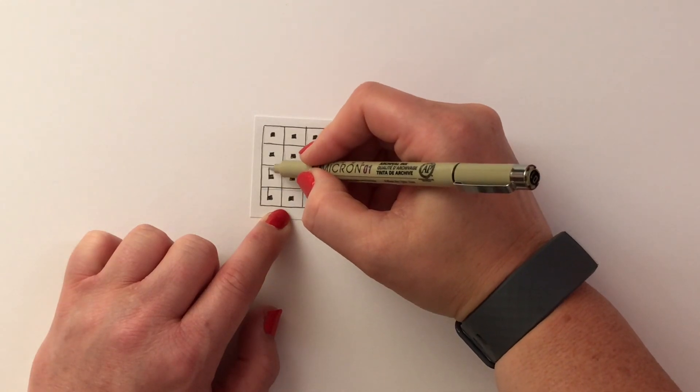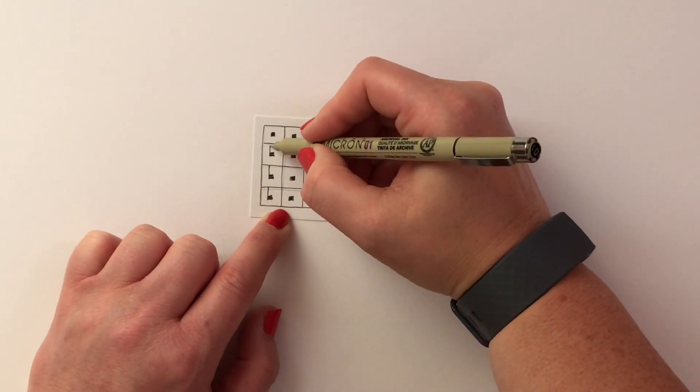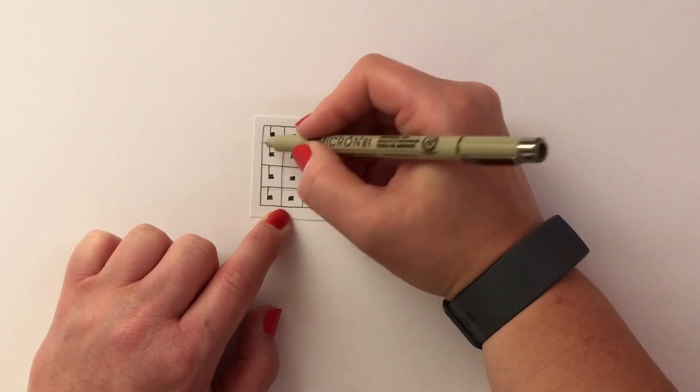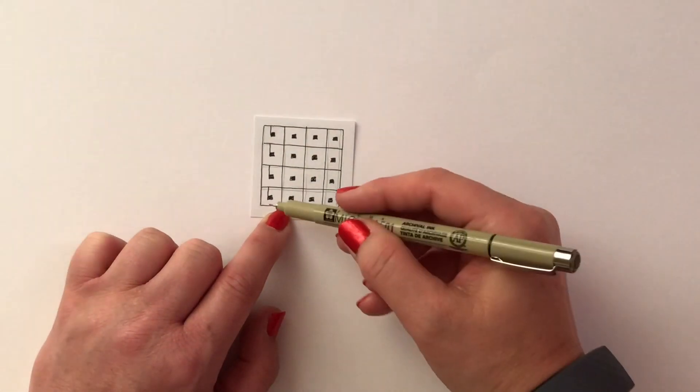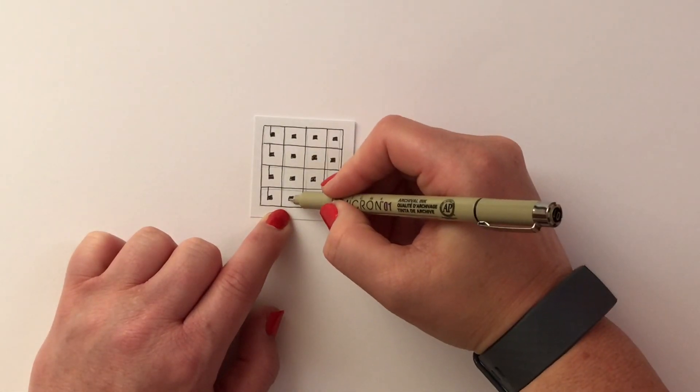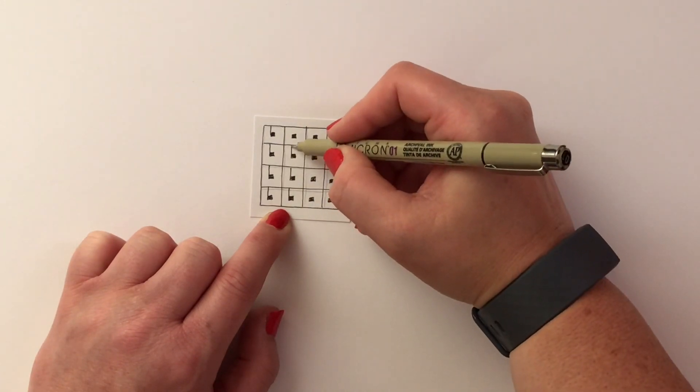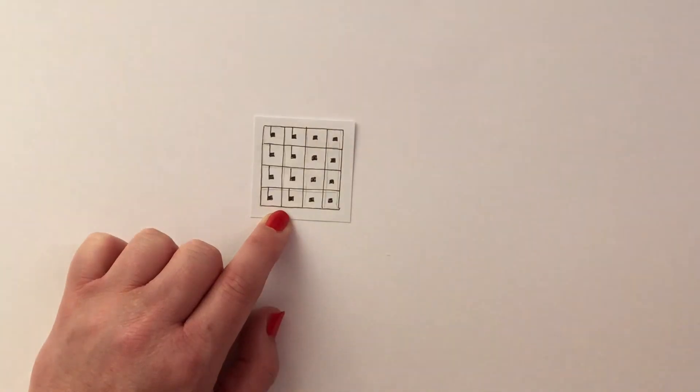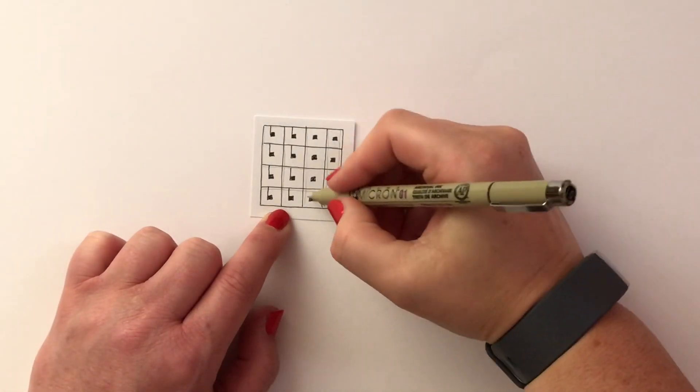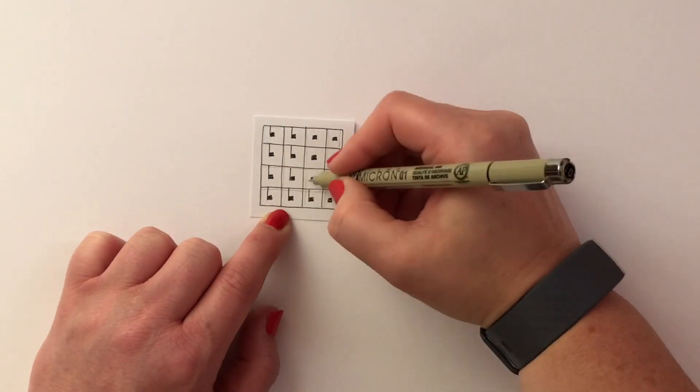Then I'm going to continue repeating going up. So for the first row this is what we've got, and then moving to the second row and I'm going to repeat. So we have that now, and then the third row, you've got it, and the fourth row.